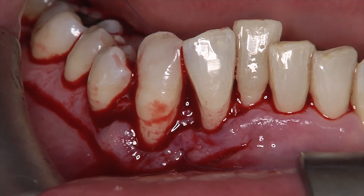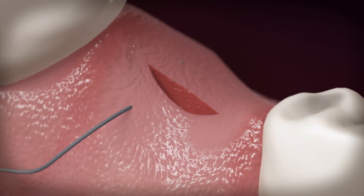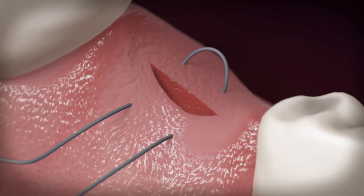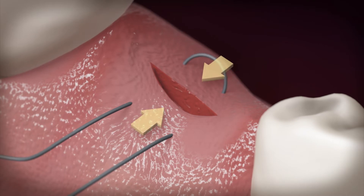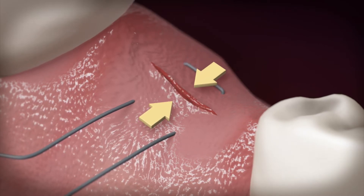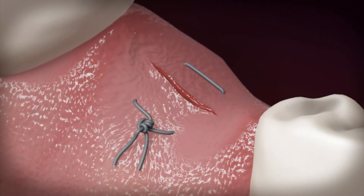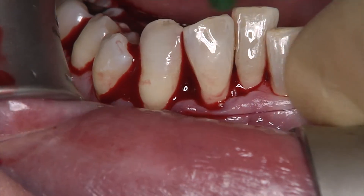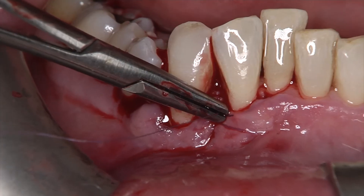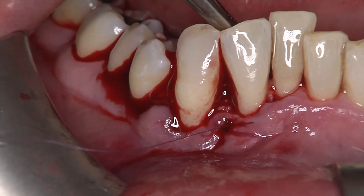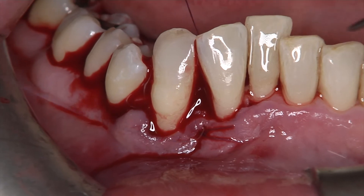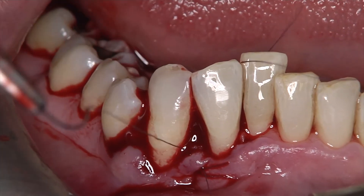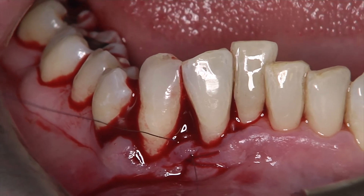Flap approximation is achieved by a first internal mattress suture placed in the buccal flap 5 mm apically to the incision, which displaces the flap at its original position. A second internal mattress suture is placed more coronally in order to ensure wound closure and primary intention healing of the flaps.